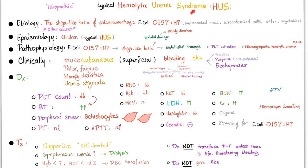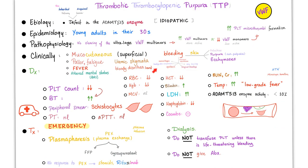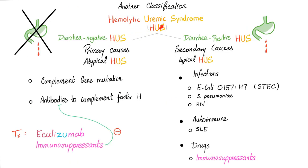The best classification of HUS has two types, each with three synonyms. Type one: diarrhea negative, atypical, primary HUS — its etiology is complement gene mutation or antibodies to complement factor H. Type two: diarrhea positive with blood in the stool, secondary HUS, and typical HUS — it is secondary to E. coli O157:H7, Strep pneumo, HIV, lupus, or immunosuppressant medications.